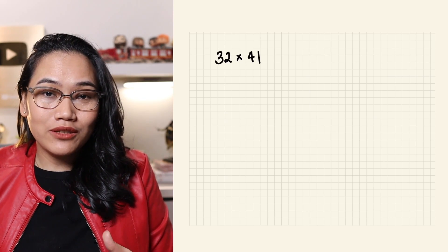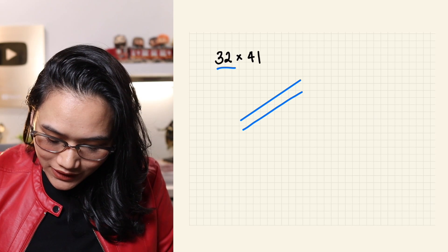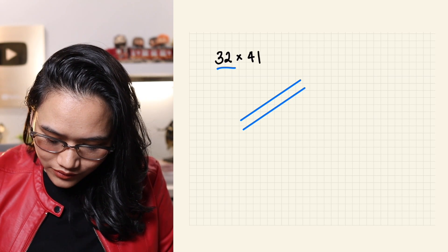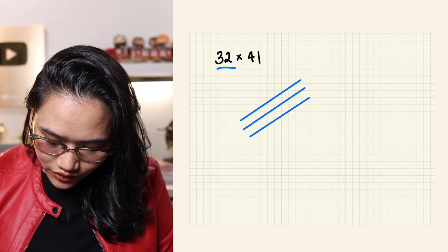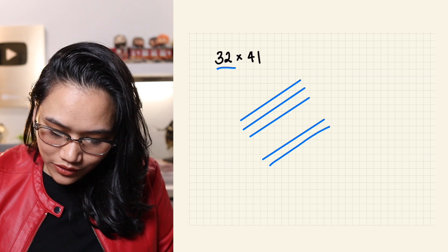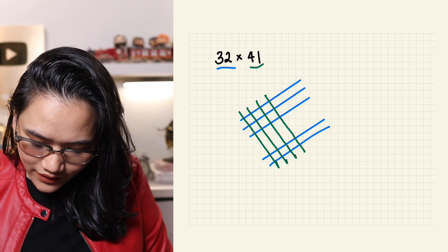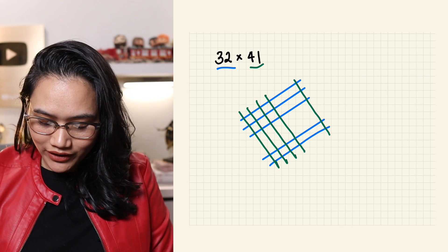Alright, let's solve it together. We have 32 times 41. So, that means we're going to draw 3 lines going up: 1, 2, 3 for 30. And then, 2 lines here at the bottom: 1, 2 for 2. Next, we're going to draw 41. So, 4 lines here and 1 line here. Now, we're going to start counting.